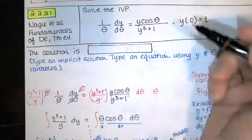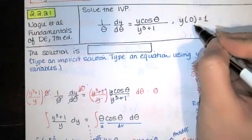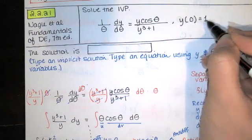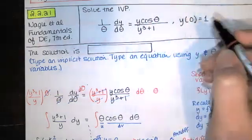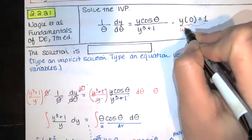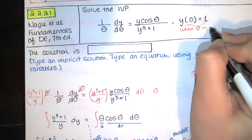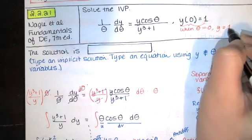Now remember what this means. This is telling us that when our independent variable equals zero, y is equal to one. From context we know that's theta. Our independent variable is theta. So this means that when theta equals zero, y is equal to one.